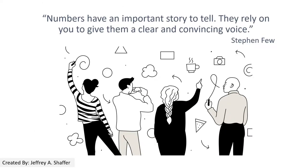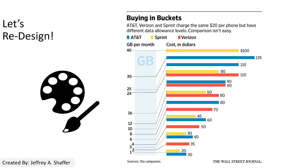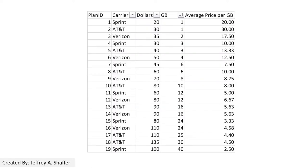As Stephen Few said, numbers have an important story to tell — they rely on you to give them a clear and convincing voice. Now if we go back and look at this example from the Wall Street Journal and do a redesign — here is the data. We can see that dollars go from $20 to $135, and the gigabyte plans go from 1 gigabyte to 40 gigabytes.